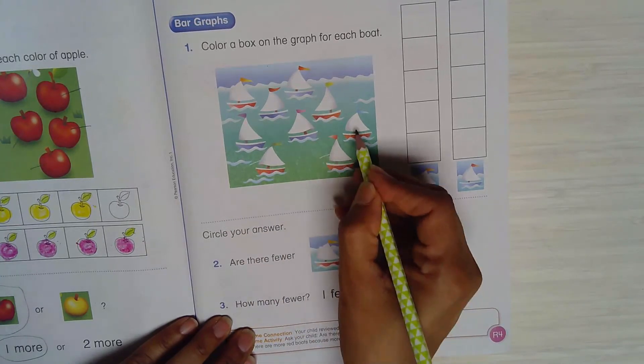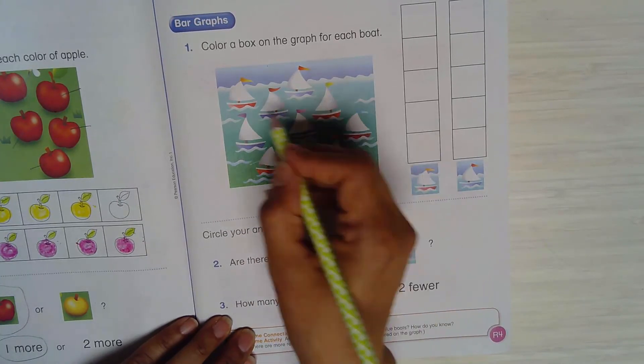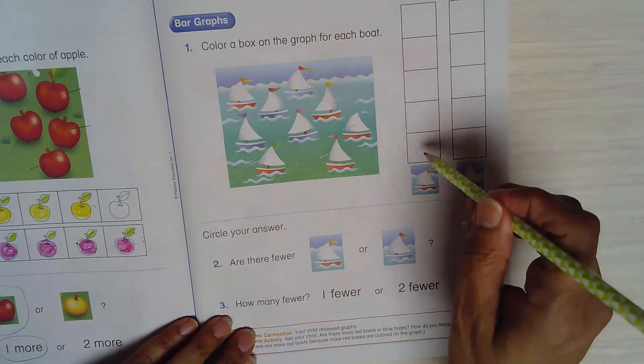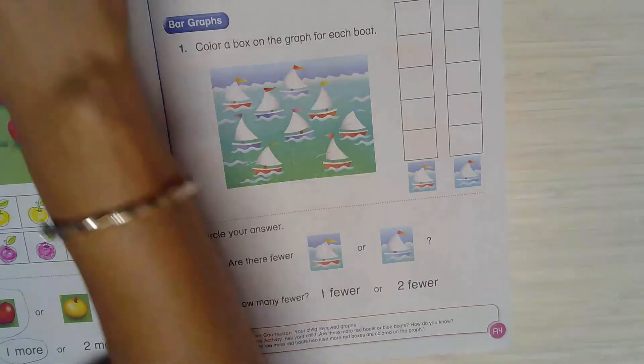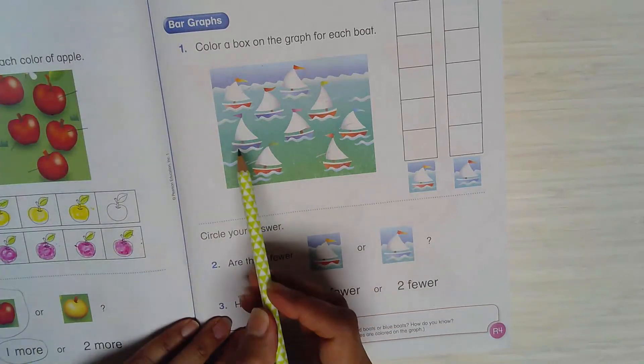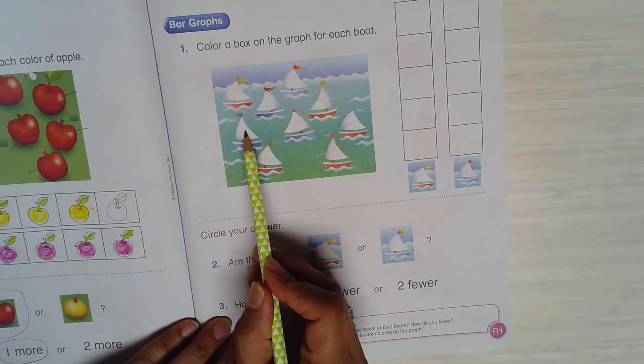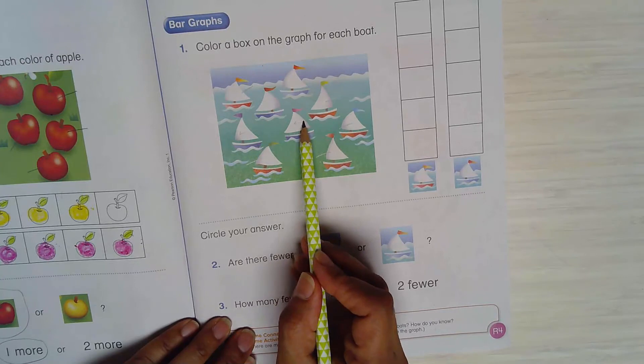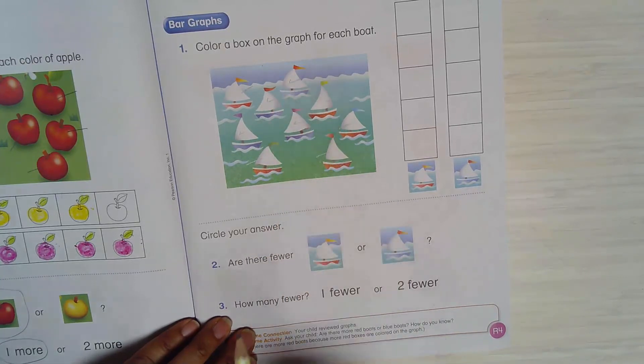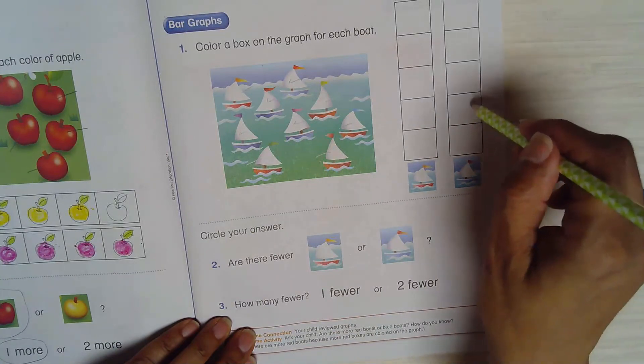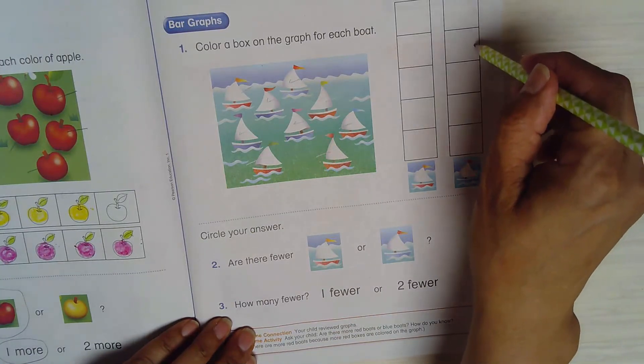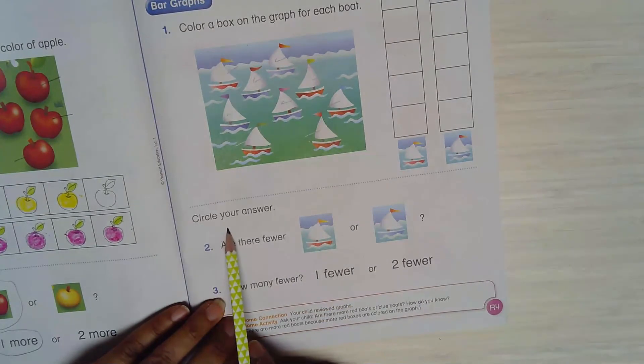All right, how many blue? One, two, three, four. I didn't miss any, so four blue boats, so you're gonna color four square. All right, and then you can answer your question.